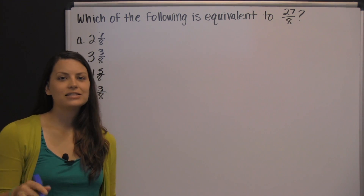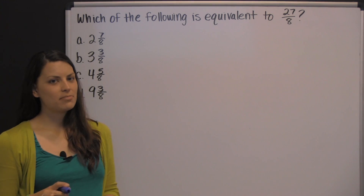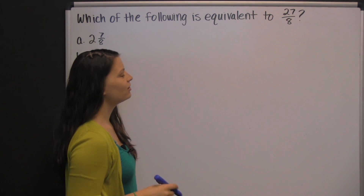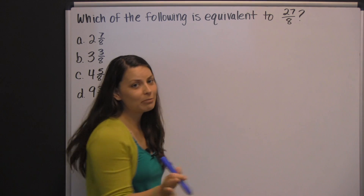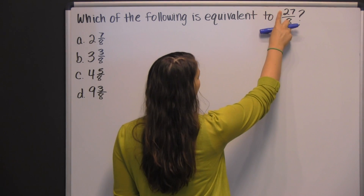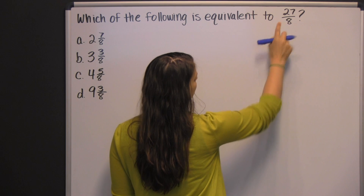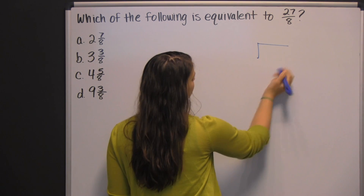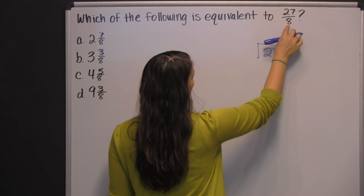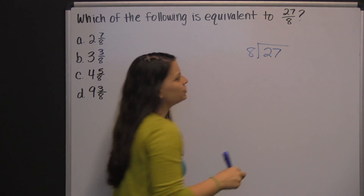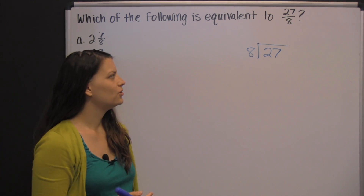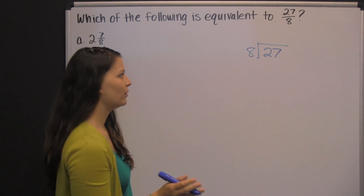I like to say 'top in, bottom out' — that's how I remember how to divide my numbers. The top number goes inside and the bottom number goes outside. It's a cute little way to remember where to put your numbers, because you can't get the right answer if you put them in the wrong place to begin with.